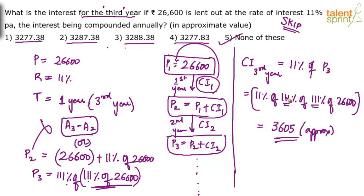Using the effective percentage formula: instead of finding the amount for three years, find the compound interest percentage for three years. Apply a + b + ab/100 twice for three 11% values, then subtract the two-year compound interest percentage. Whatever value you get, apply that on 26600 to get the answer.